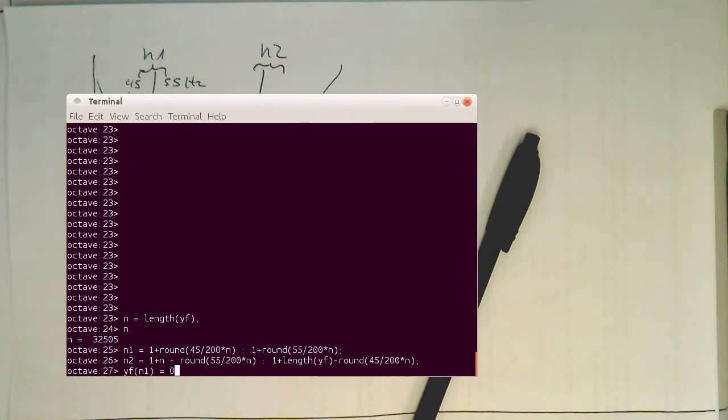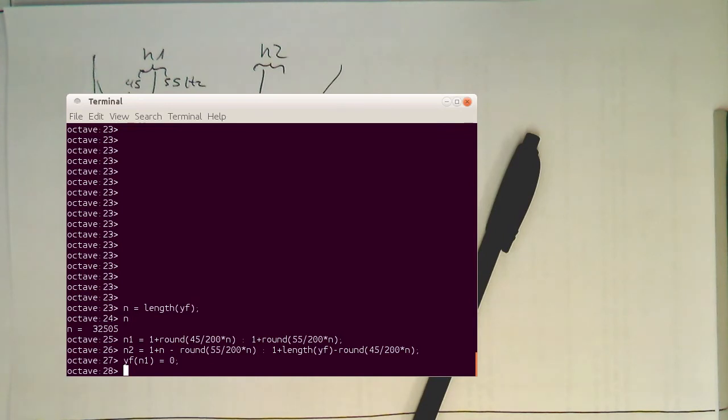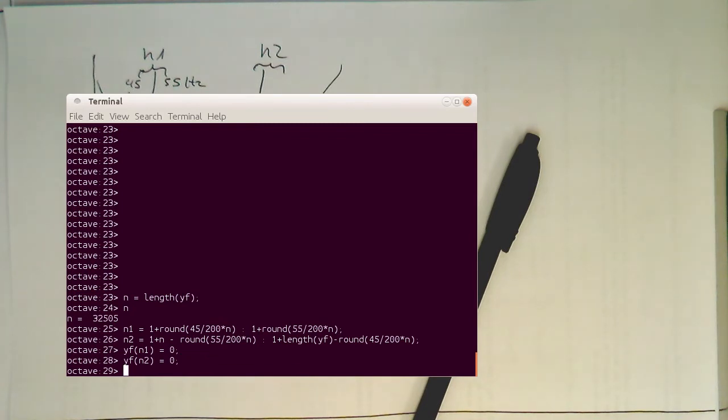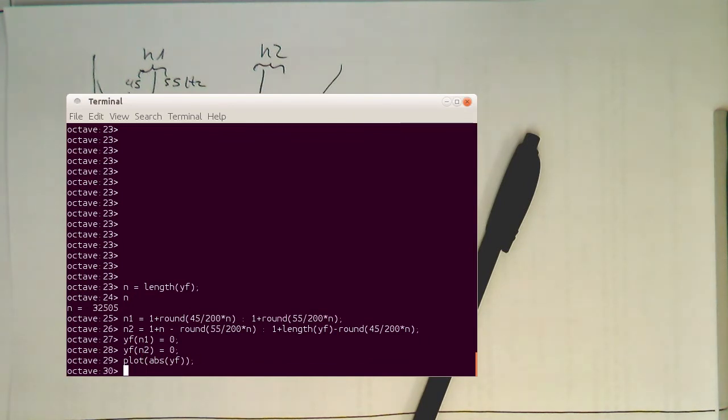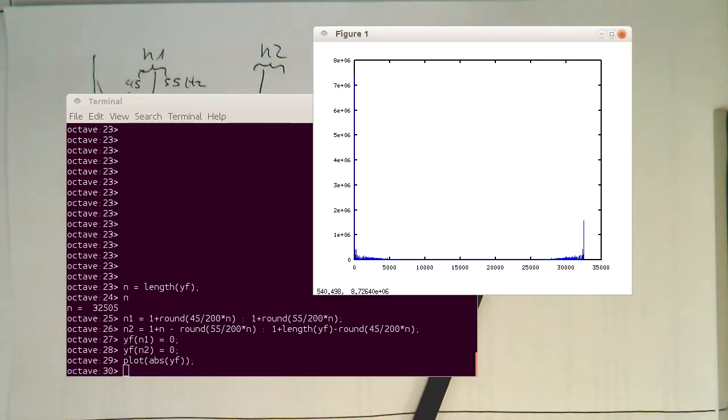So now the only thing what we need to do is we set our frequency range to zero. And we also do it for the mirror. So now both are zero. So hopefully, if we are plotting this here, then our 50 Hertz peaks should be gone in the frequency domain. So we don't see any peaks anymore here. So we just see the signal.